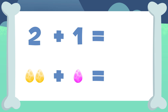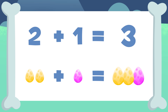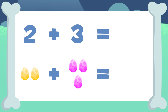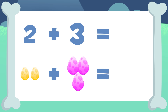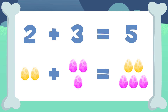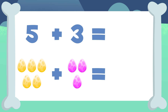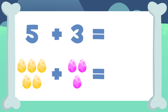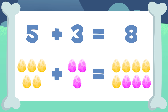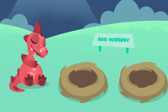Two plus one equals one, two, and three — two plus one equals three. Very well! Let's do the next one: two plus three equals one, two, three, four, and five — two plus three equals five. Way to go! Let's do another one: five plus three equals one, two, three, four, five, six, seven, and eight — five plus three equals eight. So good!